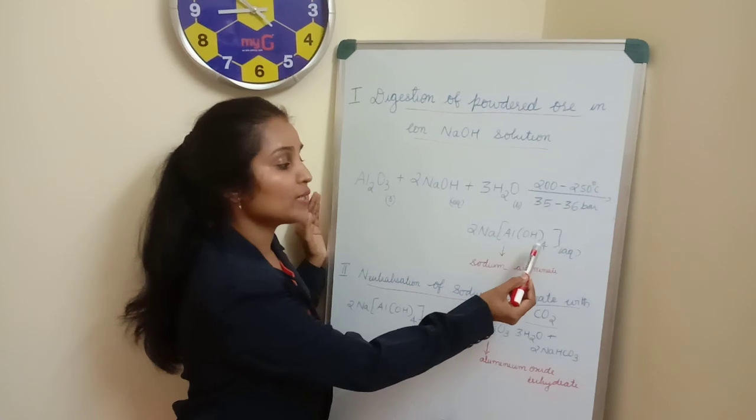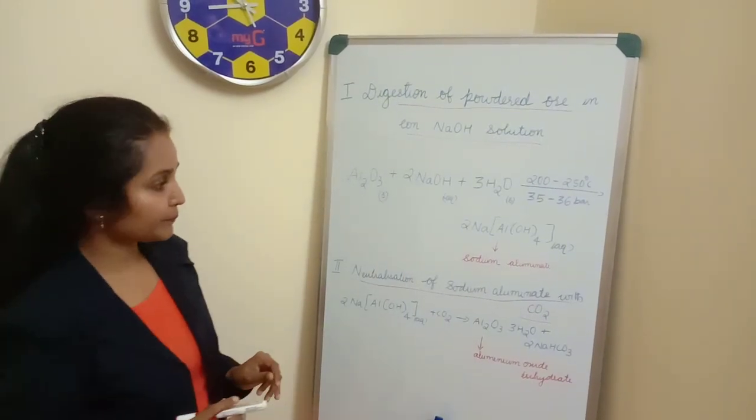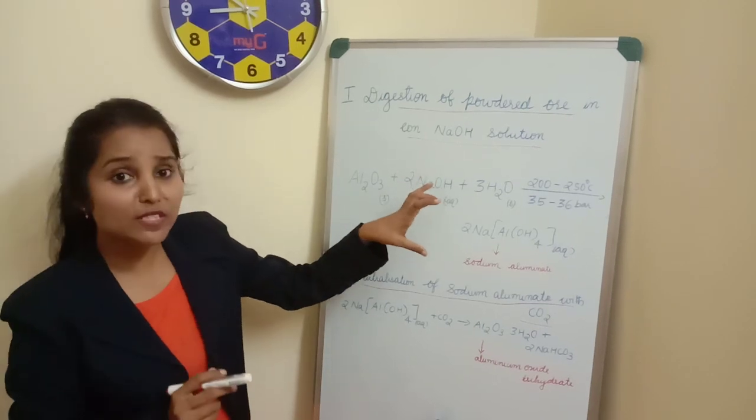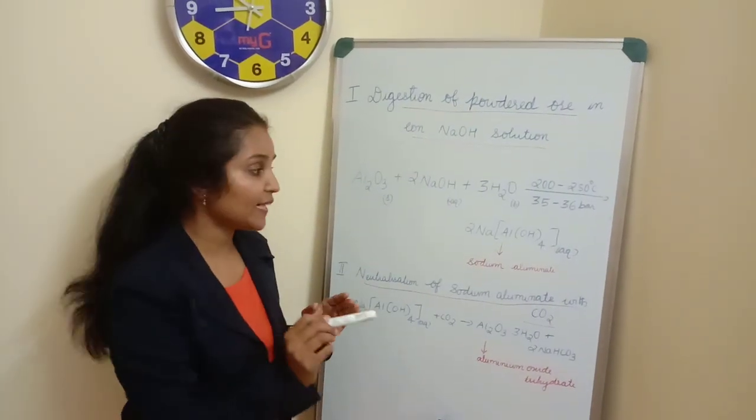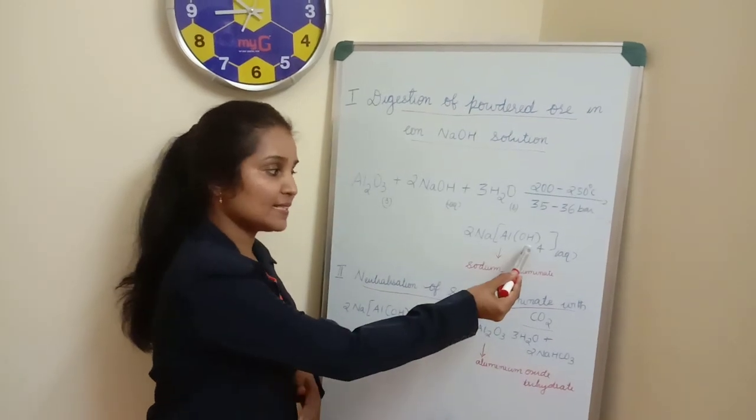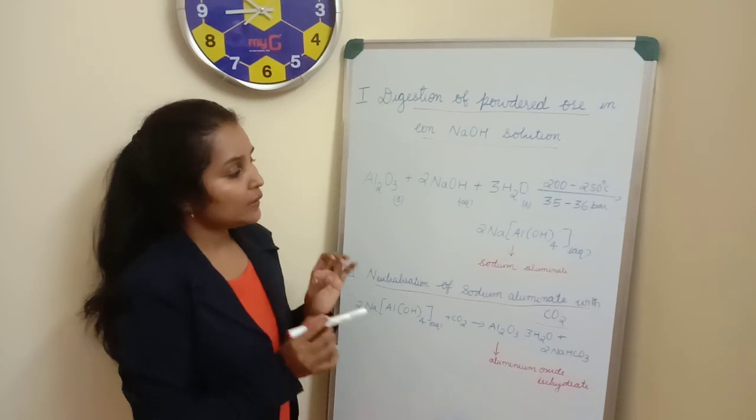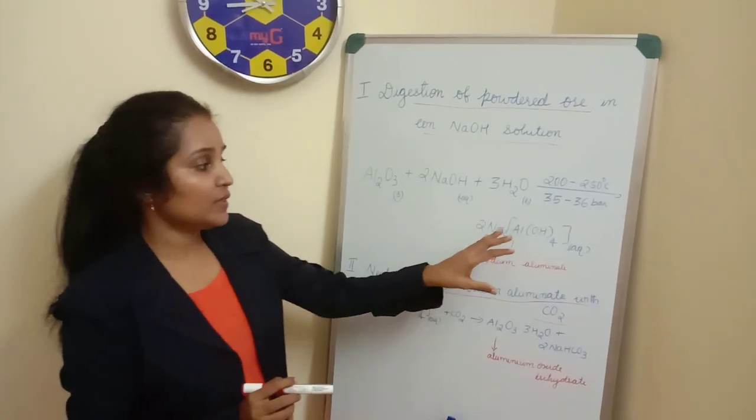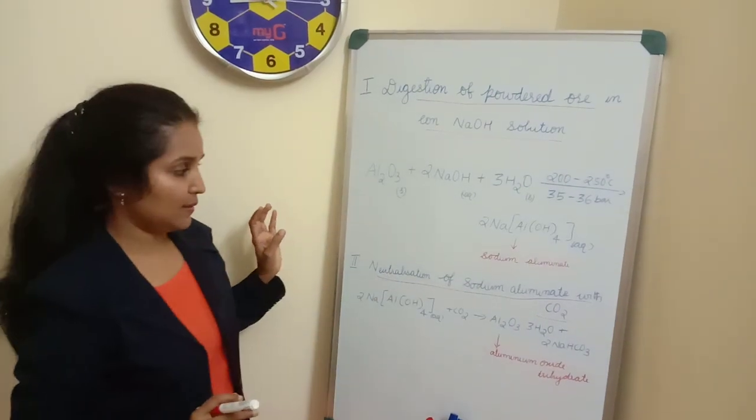After getting digested into sodium hydroxide solution, it forms a soluble complex which is known as sodium aluminate. This is the chemical formula: Na Al (OH)4. This formed sodium aluminate is basic in nature. You can understand by seeing there is a hydroxide group present in that. So this basic sodium aluminate should be neutralized.